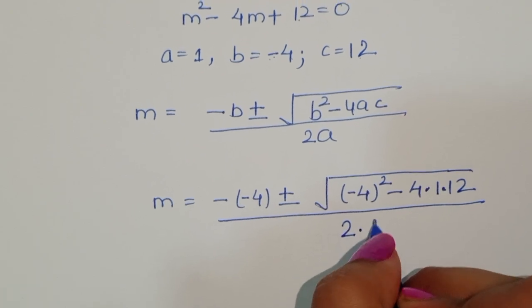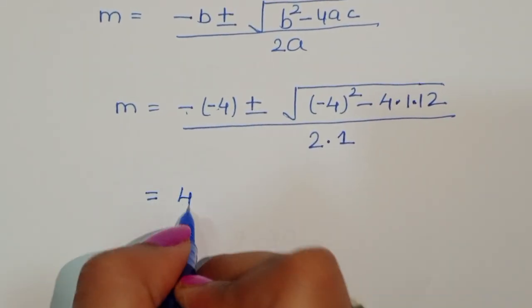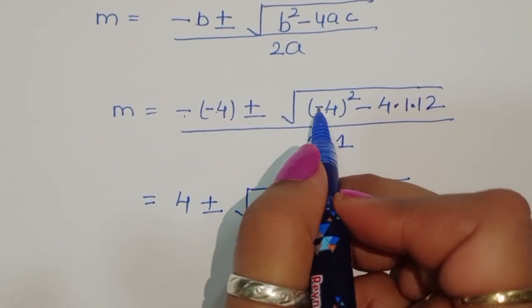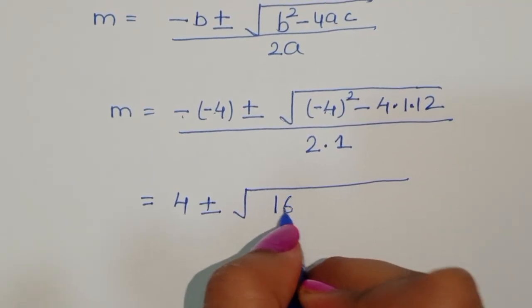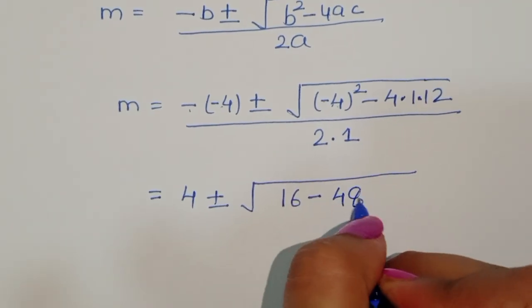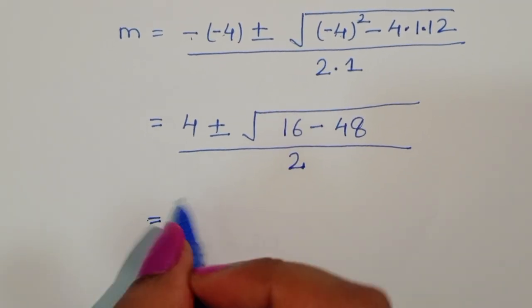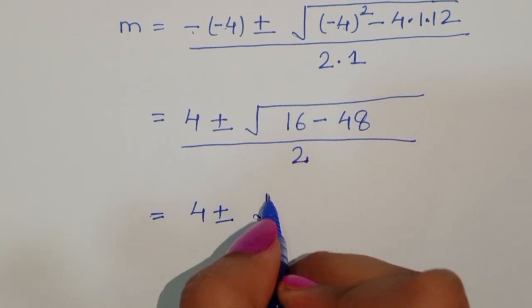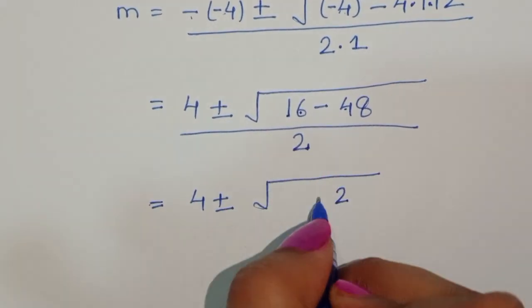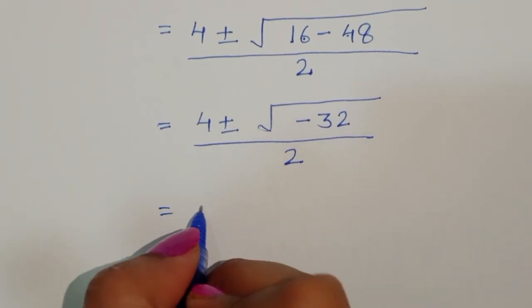Substituting: m equals negative of minus 4 plus or minus the square root of (minus 4) squared minus 4 times 1 times 12, divided by 2 times 1. This gives: 4 plus or minus the square root of 16 minus 48, divided by 2, which is 4 plus or minus the square root of minus 32, divided by 2.